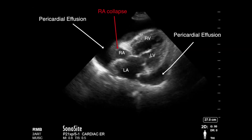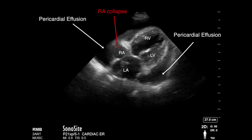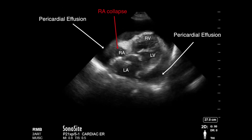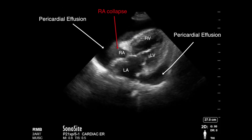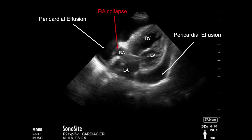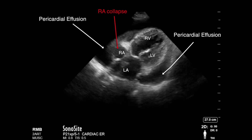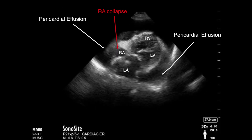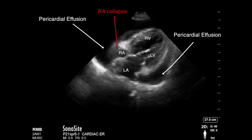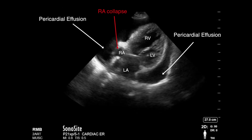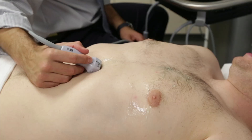Here are several clips of abnormalities identified in the subcostal four-chamber view. In this first clip, we have pericardial effusion identified with right atrial collapse seen, which would suggest tamponade physiology. Care must be taken to make sure that the axis is correct and not foreshortened.